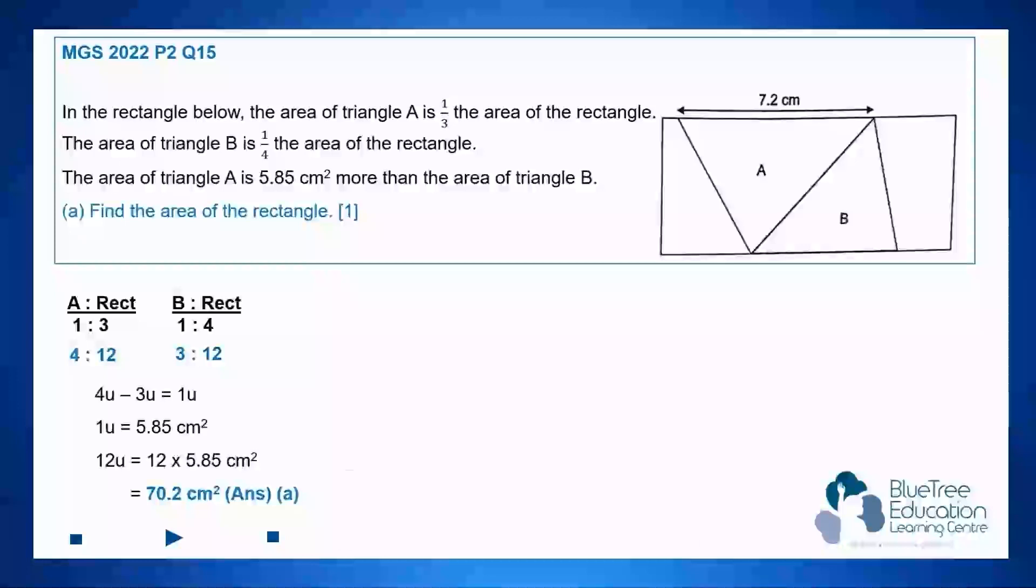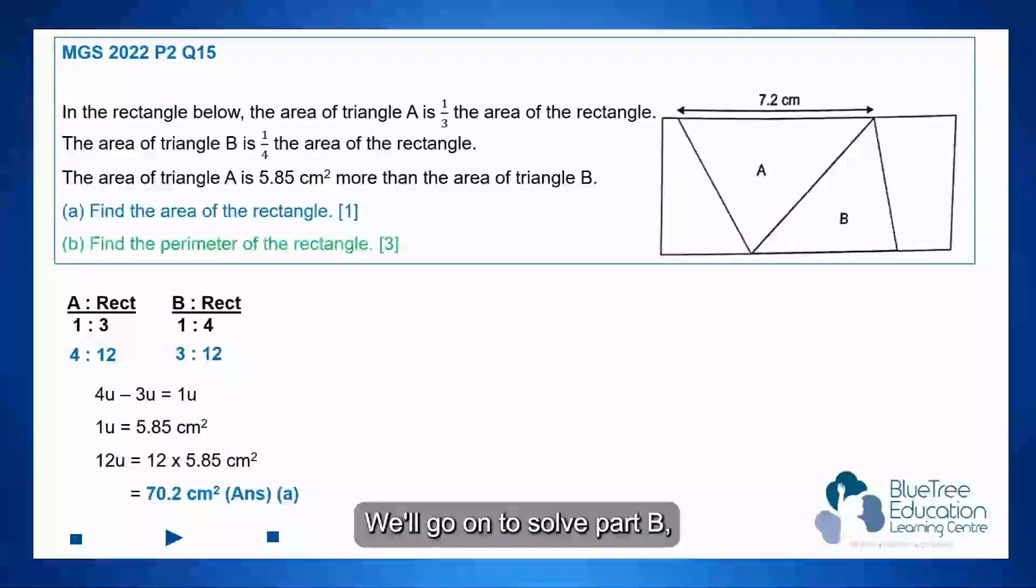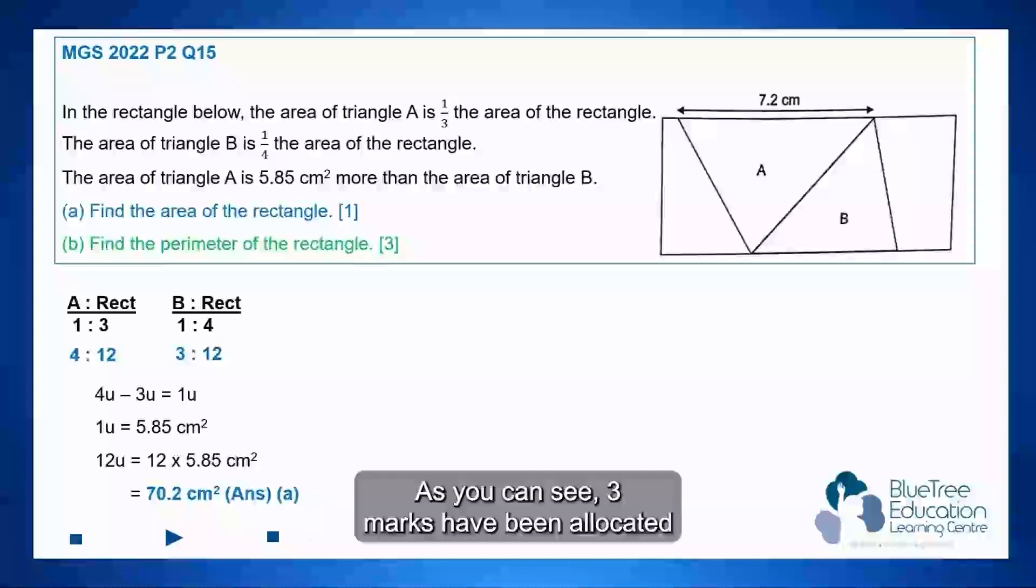Are you ready? We'll go on to solve part B. Find the perimeter of the rectangle. As you can see, three marks have been allocated to this part of the question, which means that this part definitely requires more steps than part A.